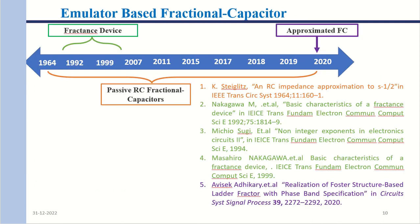Moving on to emulator-based fractional capacitors. In this approach, it is not a two-terminal device. An RC network is used in place of a fractional capacitor, realized using formulas derived to approximate the transfer function of the fractional capacitor.